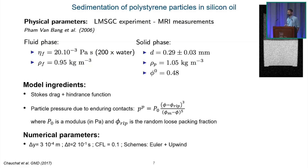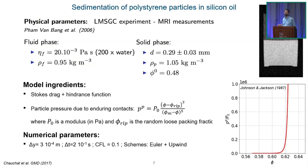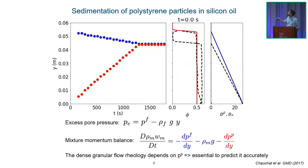The particle pressure function is zero below 57% and diverges at around 63%. For this configuration, we use 0.3 mm grid resolution for 6 cm height, a time step of 0.2 seconds giving a CFL number on relative velocity of order 0.1. The numerical scheme is first-order, upwind in time for advection. We start from a hyperbolic tangent concentration profile. The black lines correspond to measurements — the upper interface settles downward while the sediment accumulates at the bottom, generating a second interface moving upward.